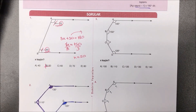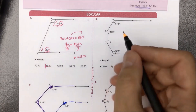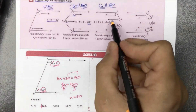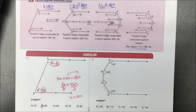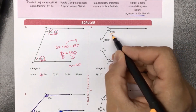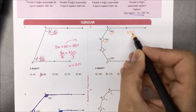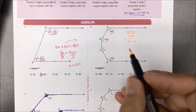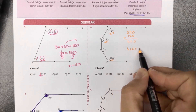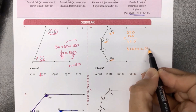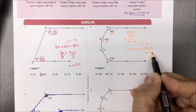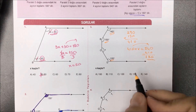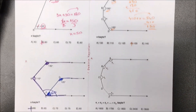Üçüncü soruya geldik: verilenlere göre X kaçtır diye sorulmuş. Paralel iki doğru arasında 1, 2, 3, 4 tane açı var; az önce söylemiştik toplamları 540 dereceydi. O halde toplayalım: 140 var; 150 daha ne yapar? 290; 120 daha var. Toplarsak 410 yaptı; bir de X'imiz var. 410 ile X'i topladığımızda 540 olacak; 540'dan 410'u çıkartacak olursak aradığımız X yanıtı 130 olarak bulunmuş olur.